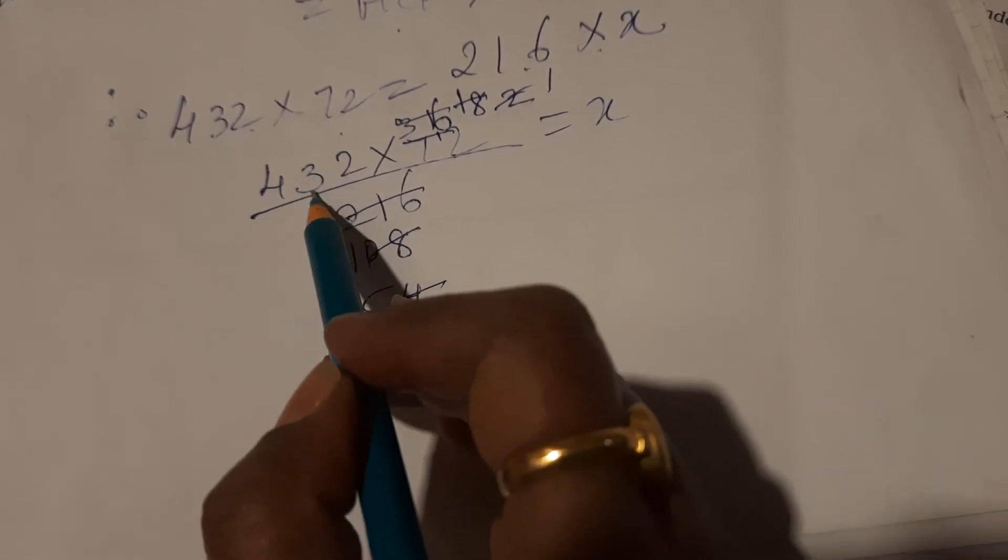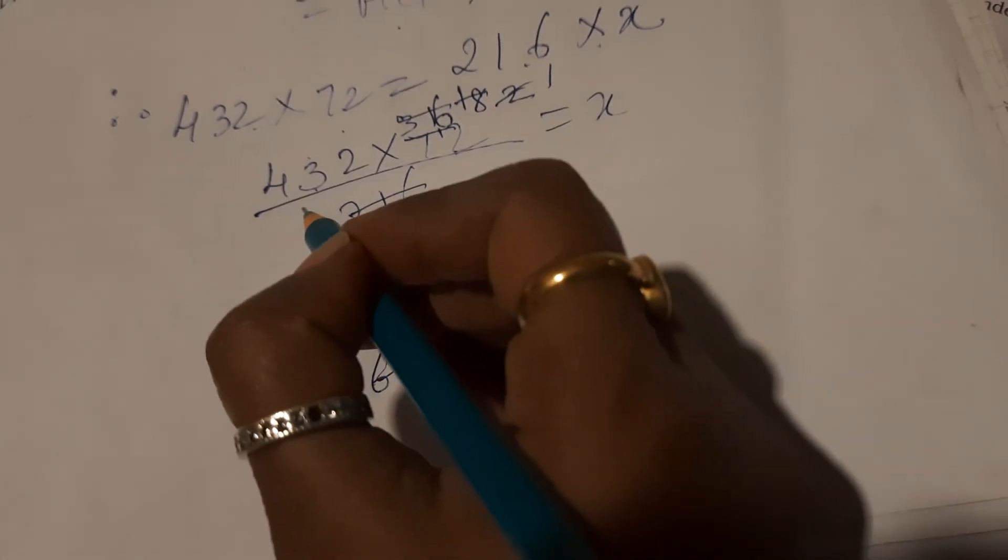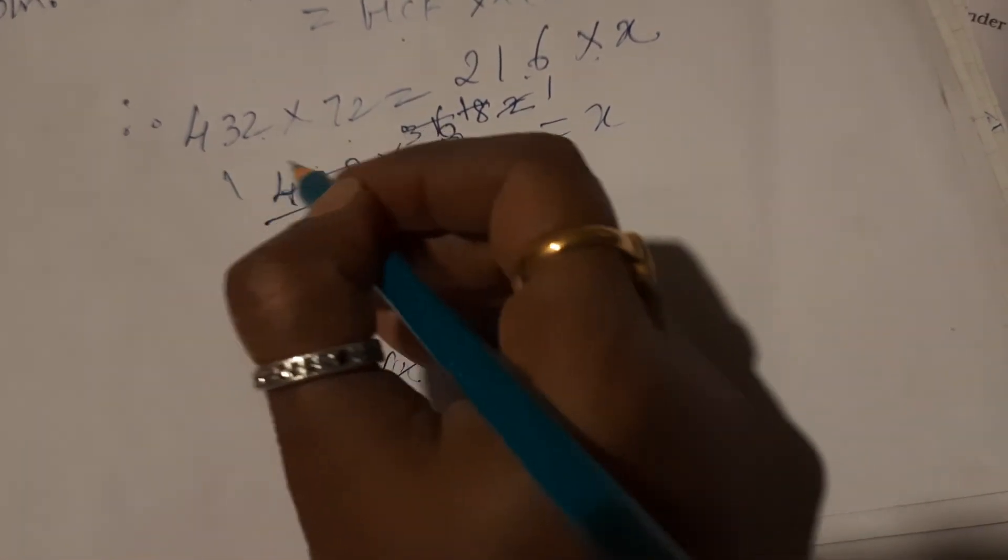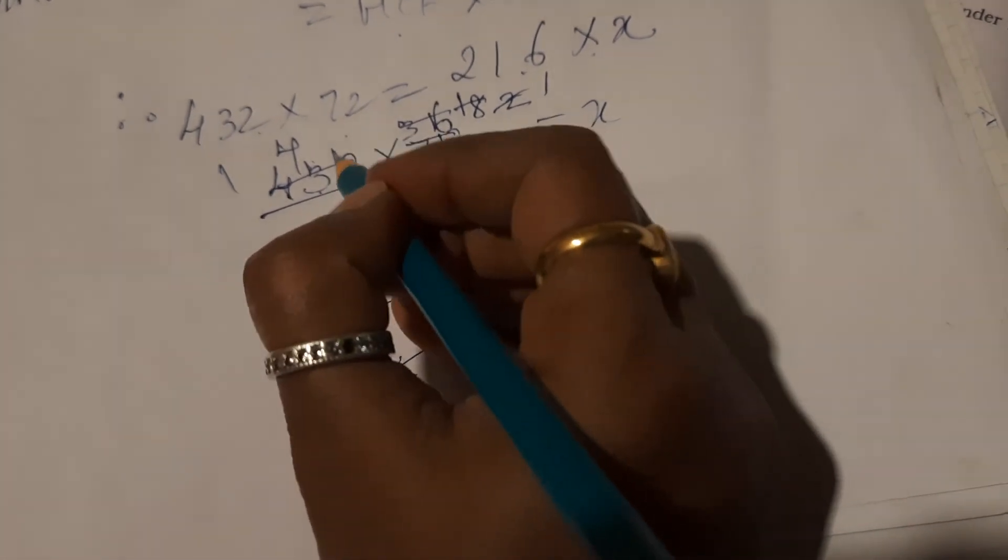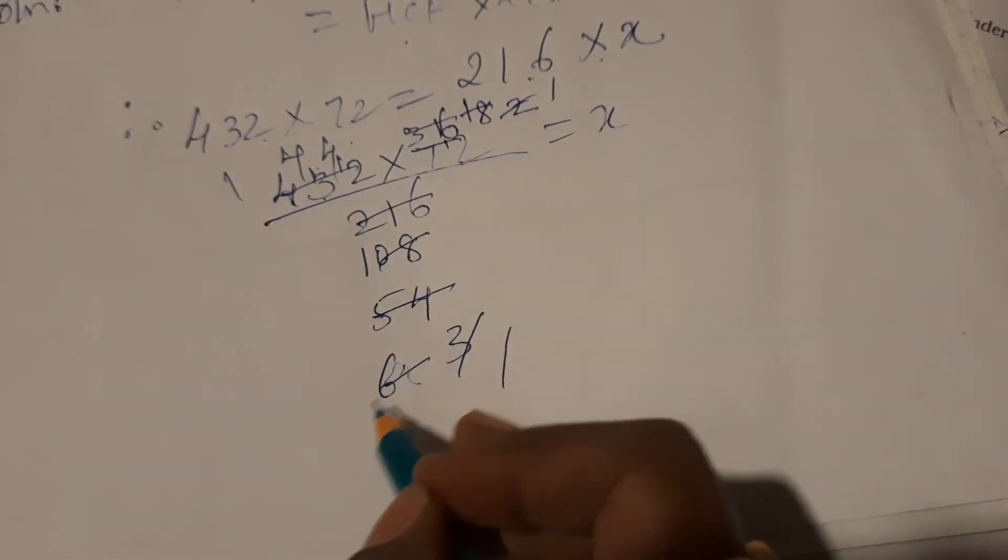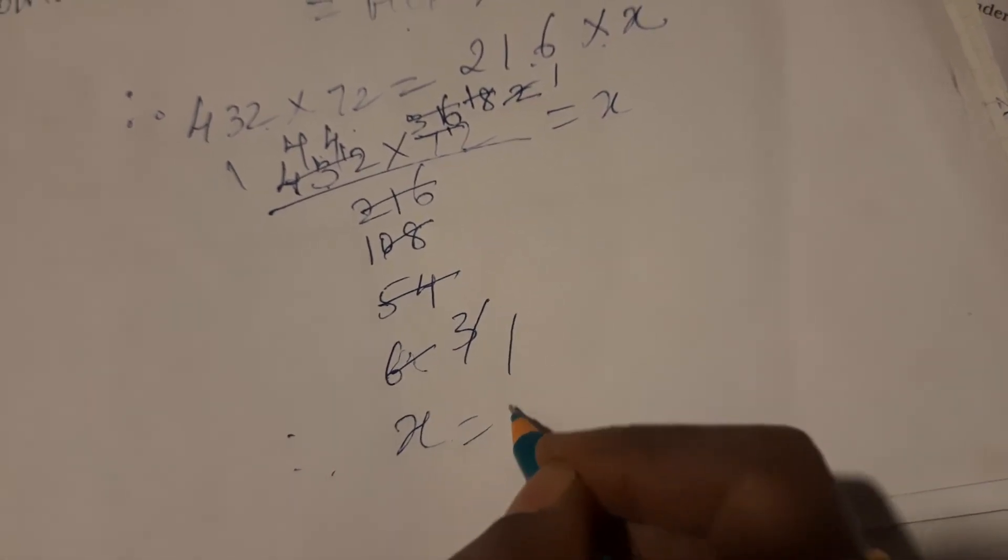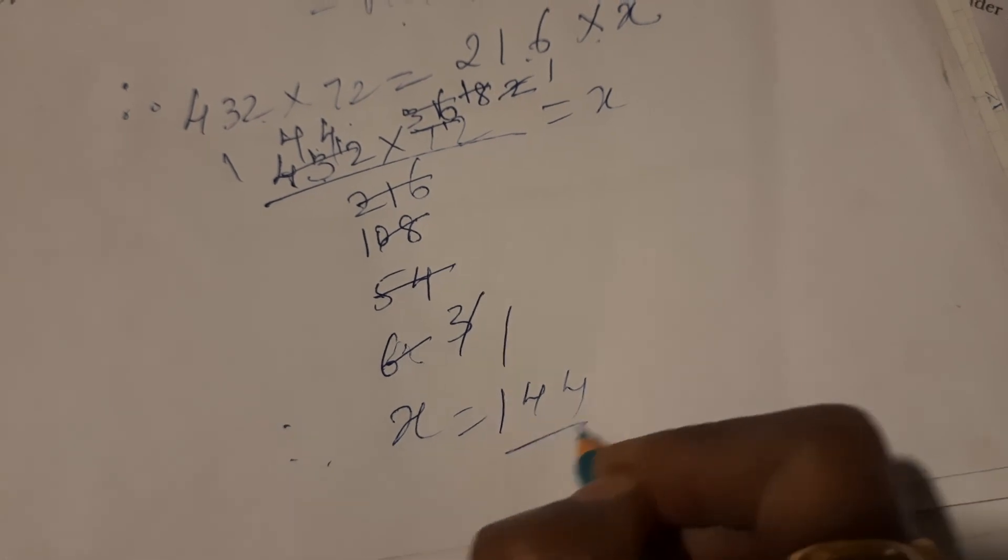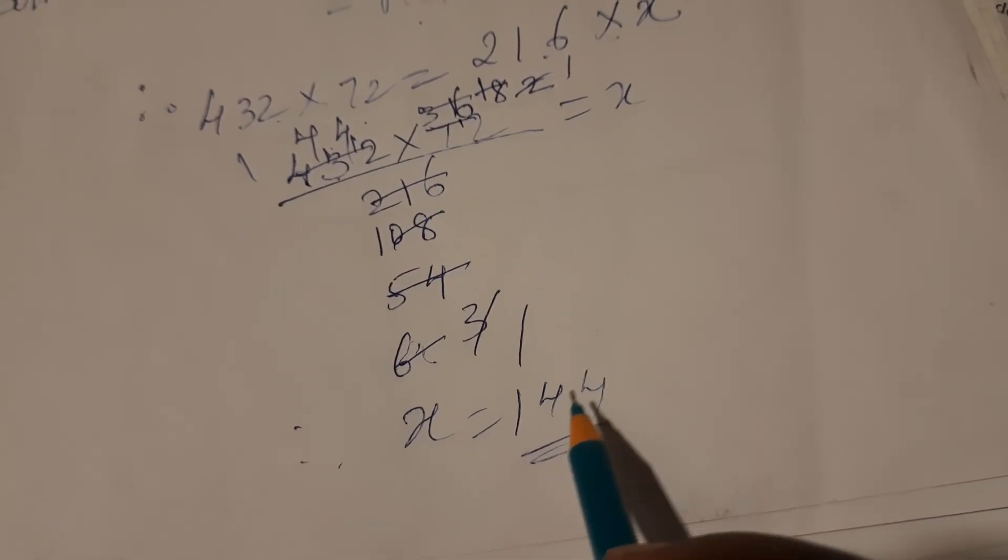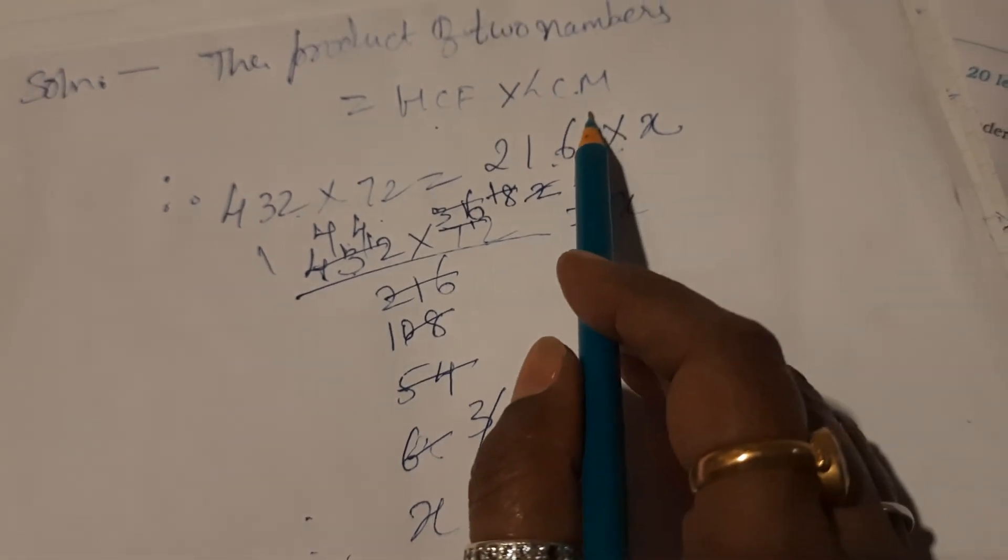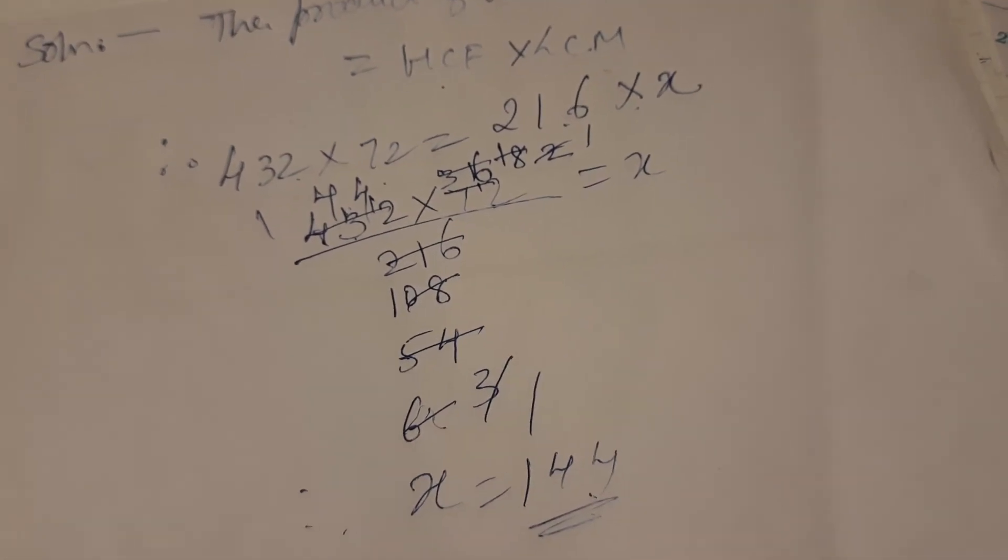3 ones are 3, 1 carry, 3 fours are 12, 1 carry, 3 fours are 12. So what are we getting? Nothing is left to cancel. X is equal to 144. That means the other number is 144. One number is 216 and the other number is 144. Hope this is clear.